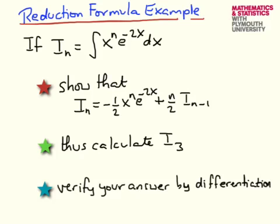In this video, I'm also going to use this to calculate I_3 — that is, the integral of x cubed times e to the minus 2x — by repeatedly reducing until we reach I_0, which is the integral of e to the minus 2x, something we can calculate directly. After that, I'll verify the result using differentiation. The next slide obtains the reduction formula, the slide after calculates I_3, and the final slide verifies by differentiation.